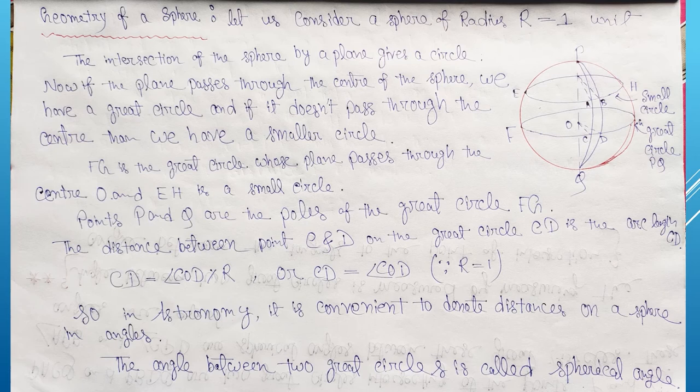Points P and Q are the poles of the great circle FG. So for the great circle FG, the points P and Q are its poles. The distance between points C and D on the great circle CD is the arc length CD.